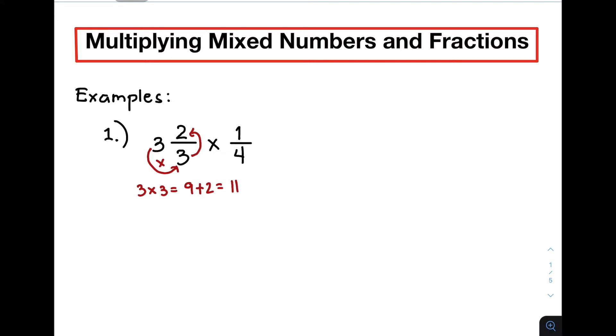As you can see, we have here 11. This 11 will serve as the numerator of the improper fraction. Then, after that, for the denominator, simply copy your original denominator in the mixed number. So, again, this 11 came from the product of the whole number and the denominator plus the numerator. So, it will be 11 over 3 times the given fraction on the other side, which is 1 over 4.